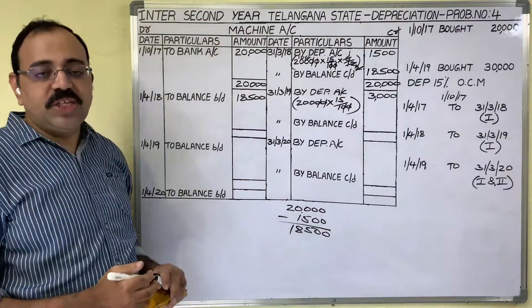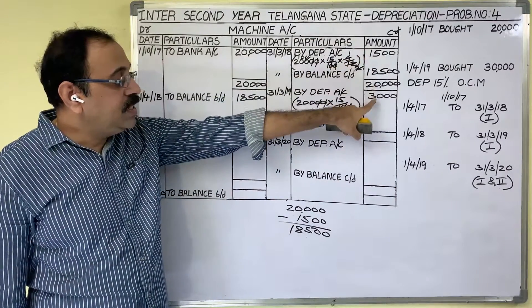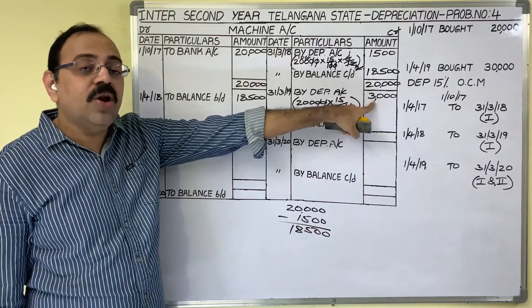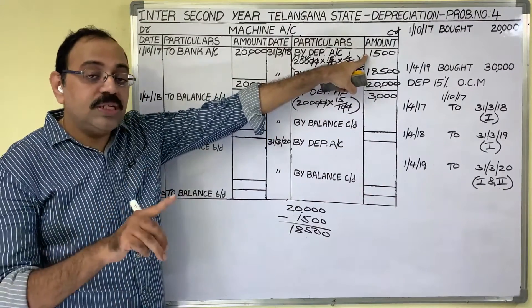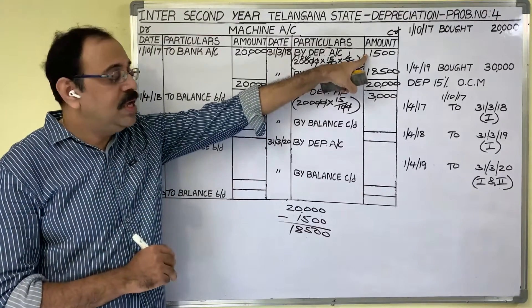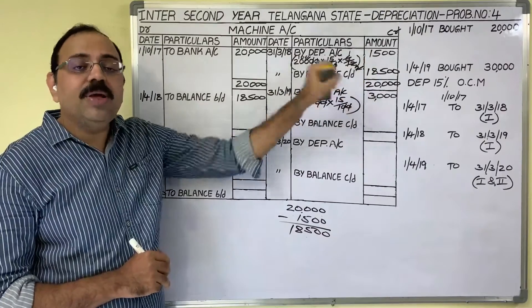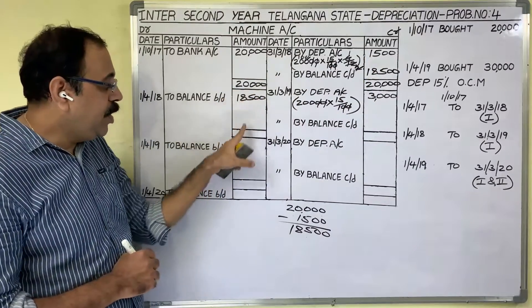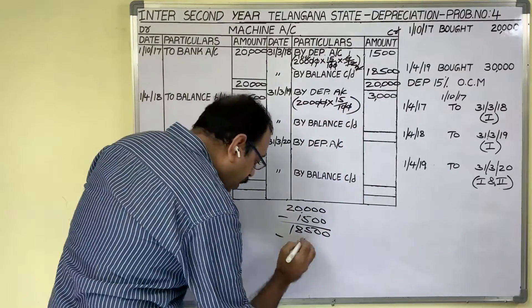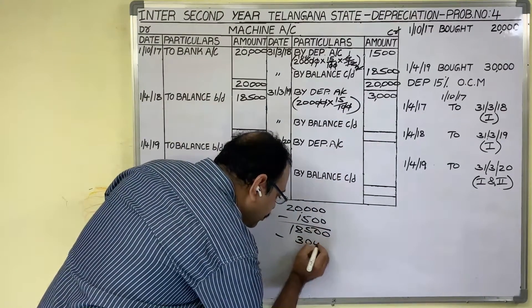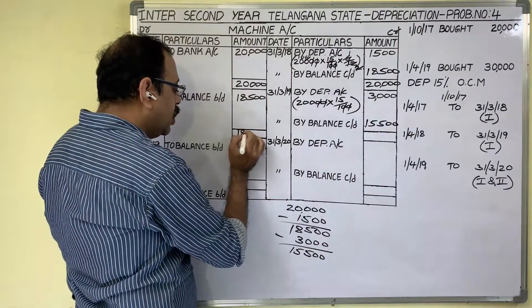Even though this is the fixed installment method, the first year depreciation and second year depreciation amounts are not the same. Because in the first year they used this asset only for six months, but in the second year they used it for the full year. Find out the balance carried down: 18,500 minus credit total 3,000. Write totals on both sides.